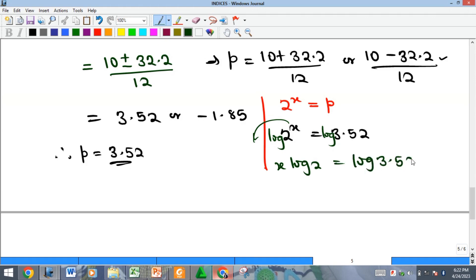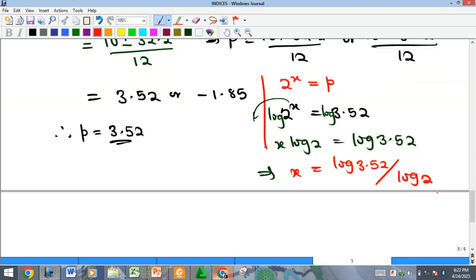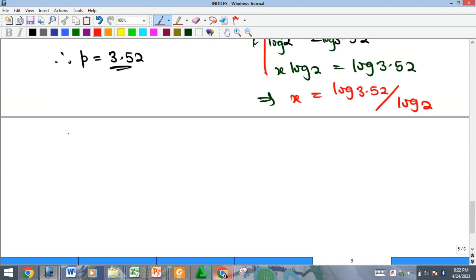We'll now have x log 2 equal to the log of 3.52. When we divide both sides by log 2, we'll get that x alone is equal to the log of 3.52 divided by log 2.